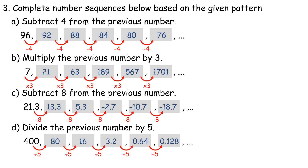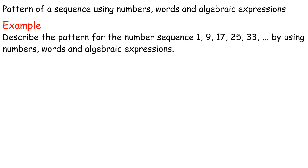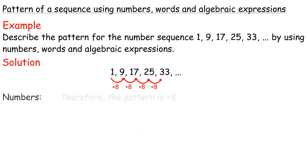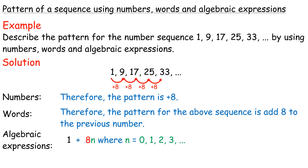The answer is as follows. Pattern of a sequence using numbers, words, and algebraic expressions. Example: Describe the pattern for the number sequence 1, 9, 17, 25, 33 by using numbers, words, and algebraic expressions. Solution. Numbers: The pattern is plus 8. Words: The pattern for the above sequence is add 8 to the previous number. Algebraic expression: 1 plus 8n, where n equals 0, 1, 2, 3.